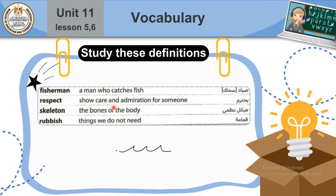Fisherman: a man who catches fish — صياد سمك. Respect: show care and admiration for someone — إظهار الاهتمام والإعجاب بشخص ما. Skeleton: الهيكل العظمي. Rubbish: things we don't need — أشياء لا نحتاجها.